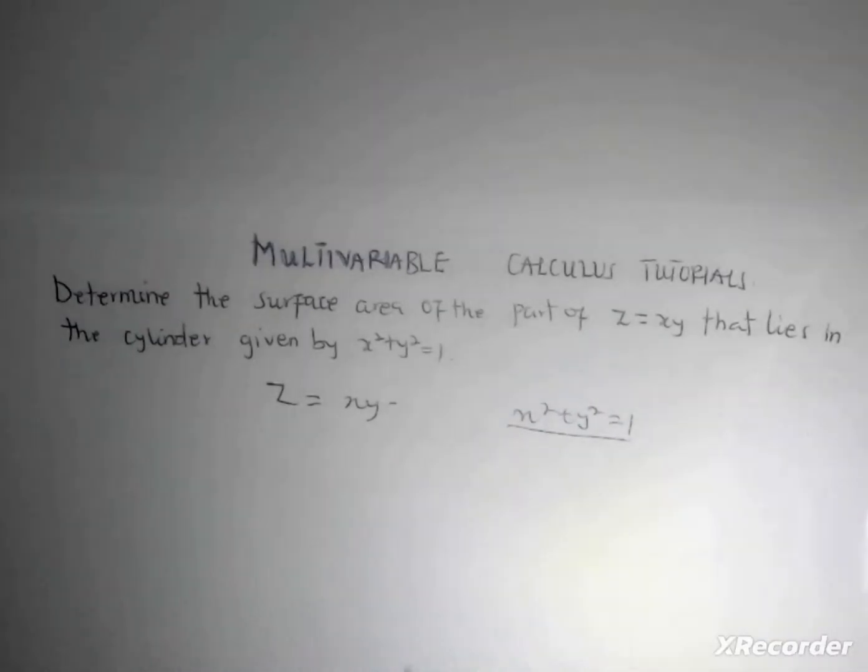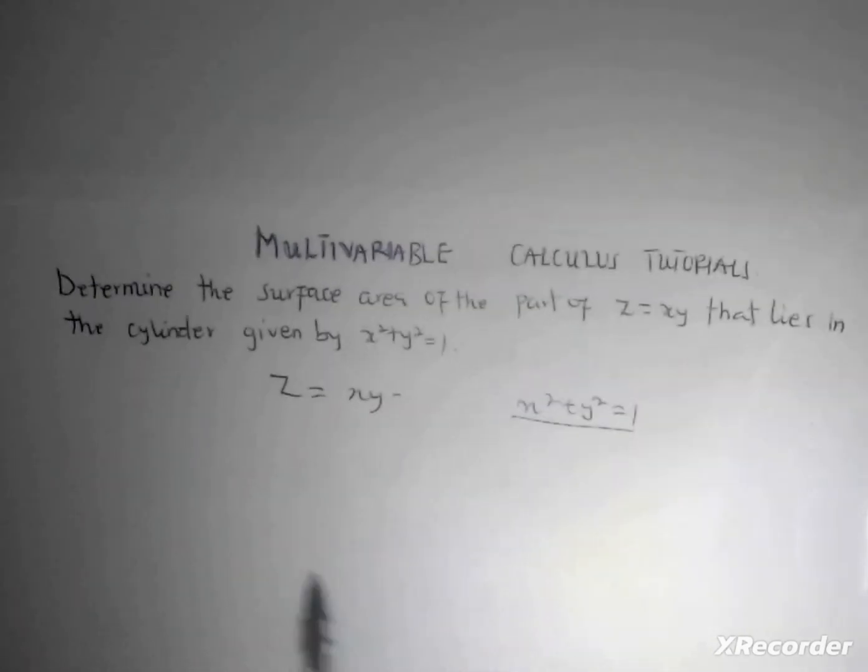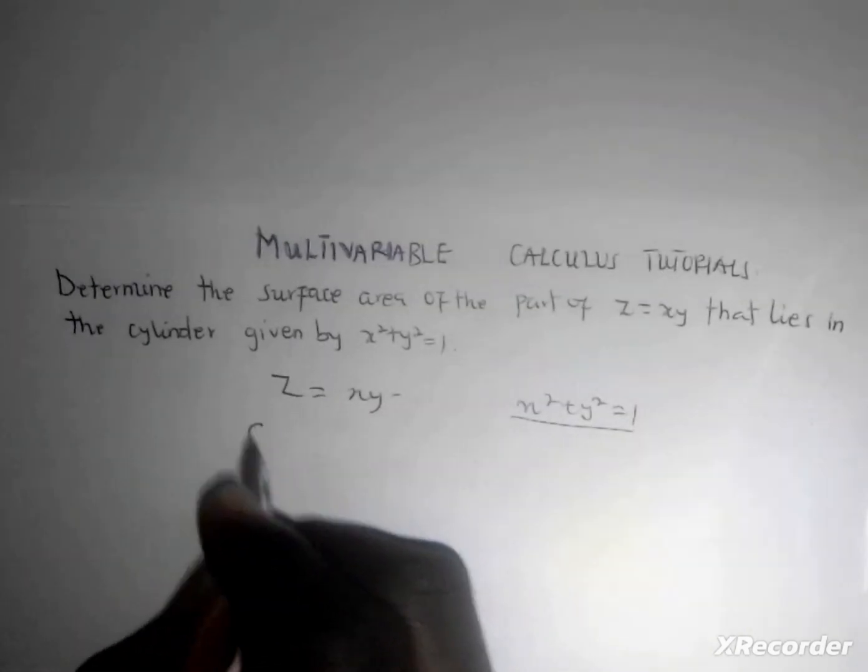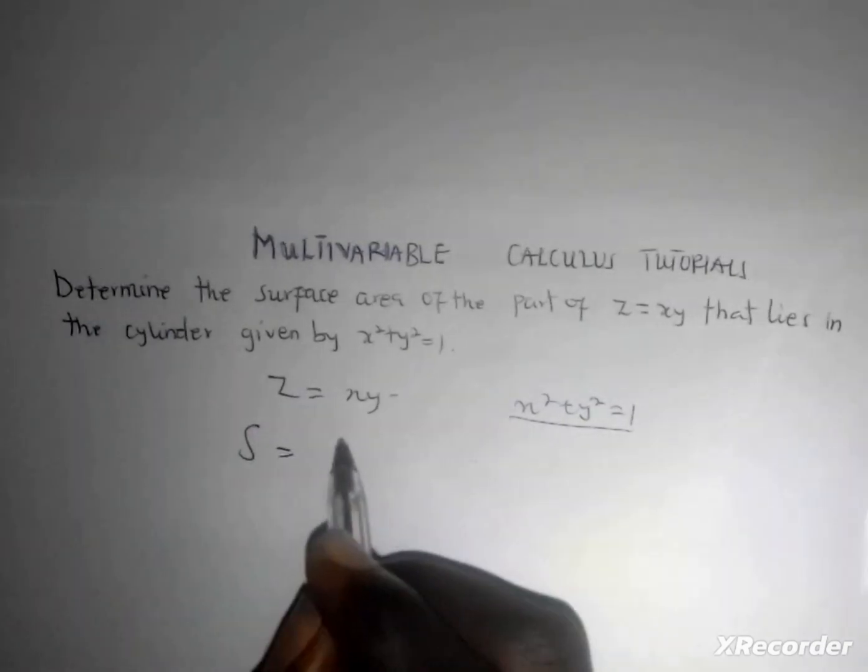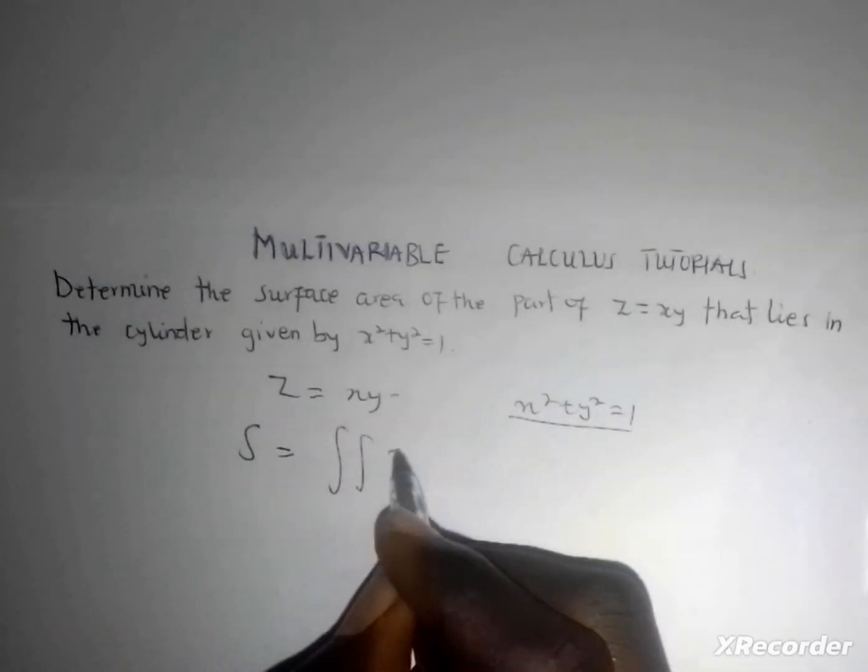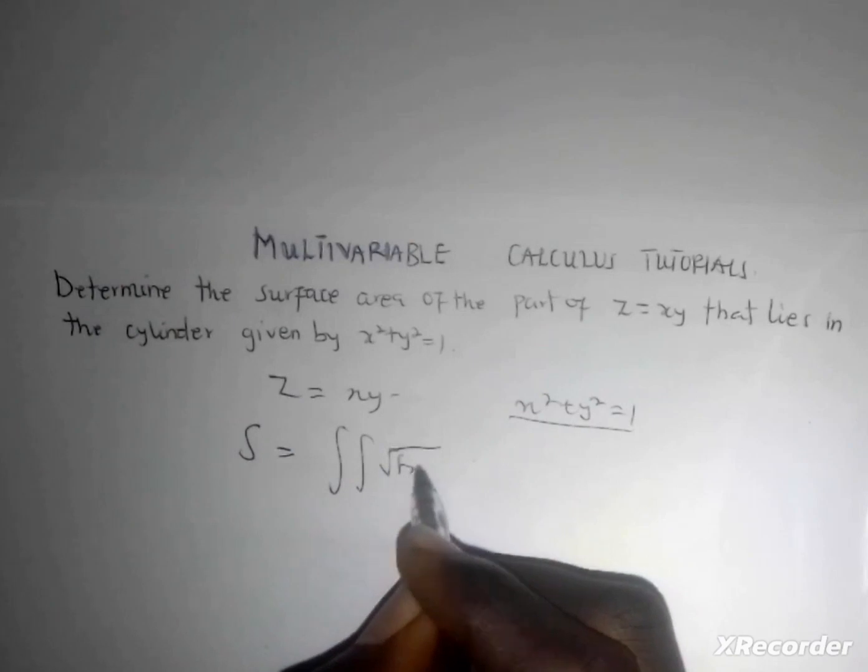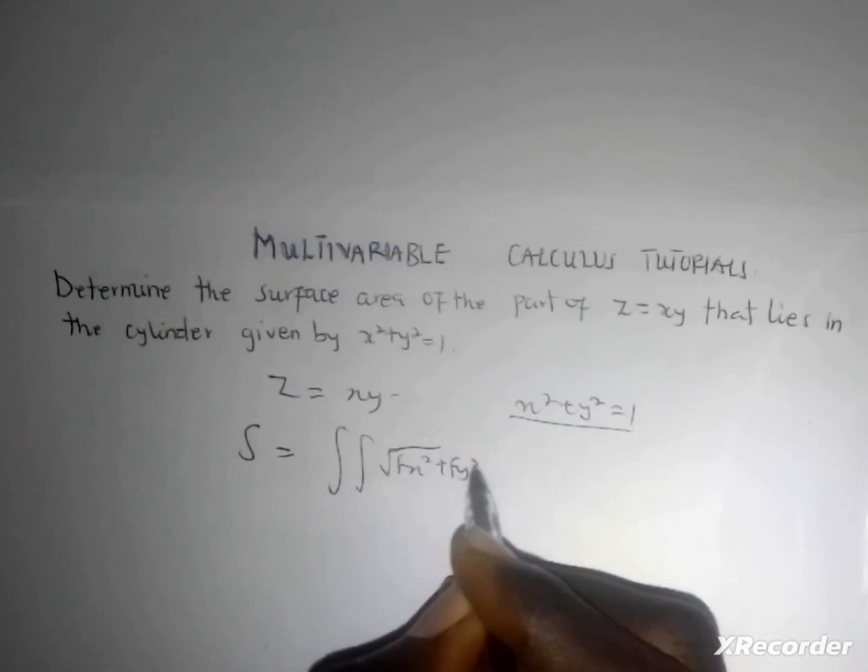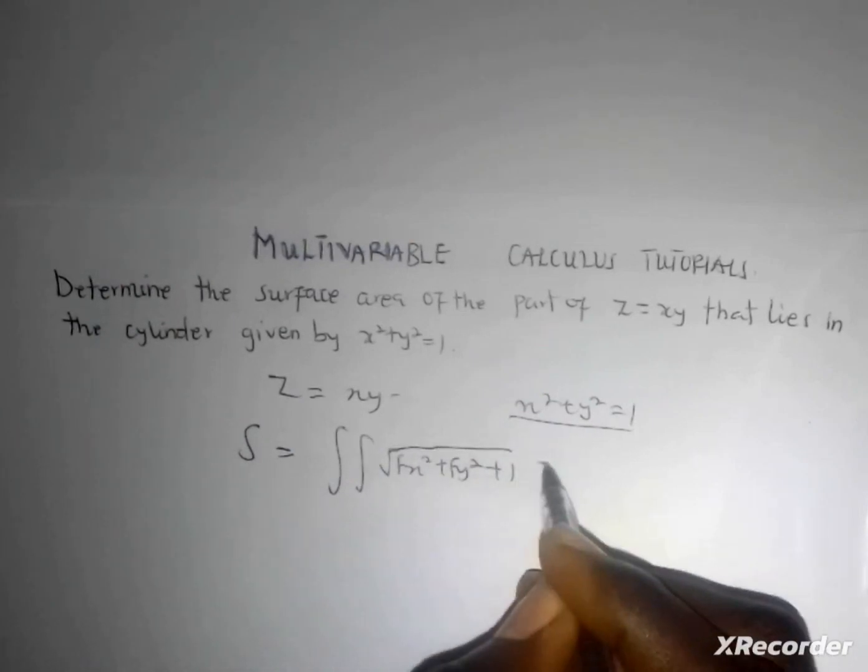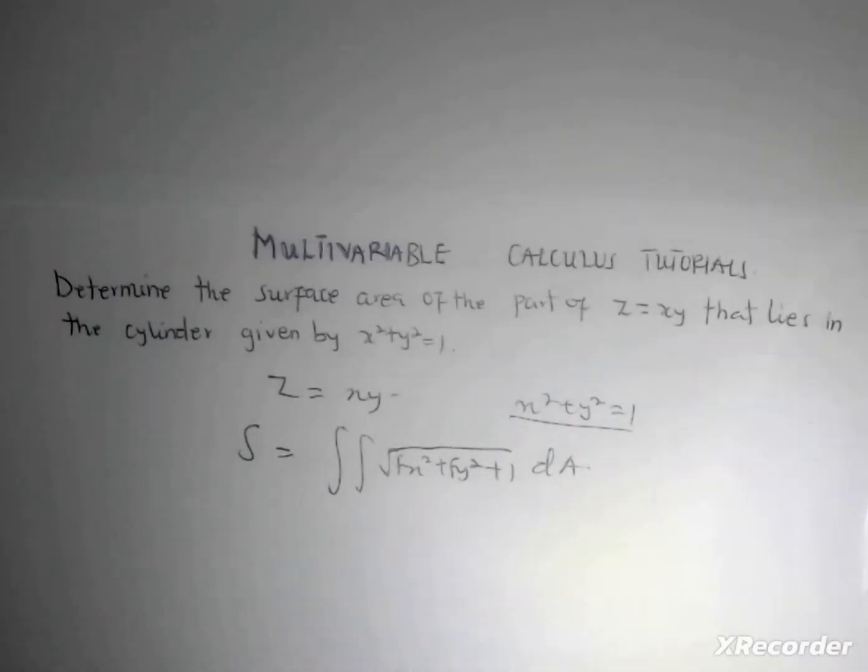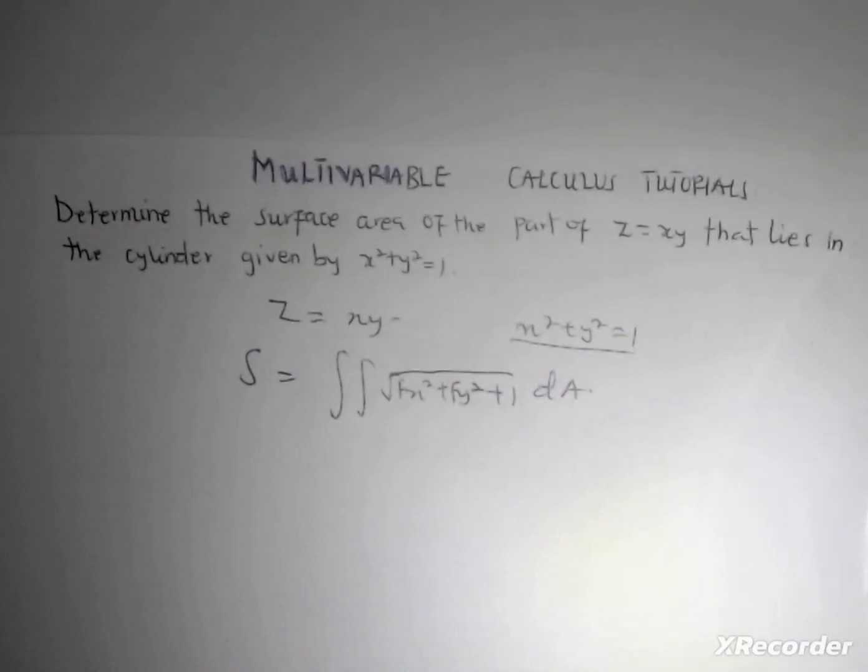This is going to give me my limits or the region boundaries, and this is the function itself. The surface area is equal to the double integral of the square root of fx² + fy² + 1 dA. At this point you need to find fx.